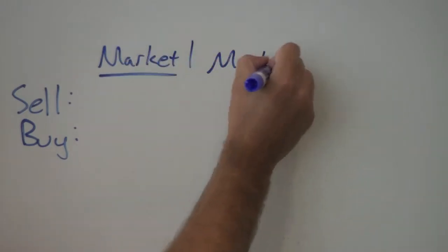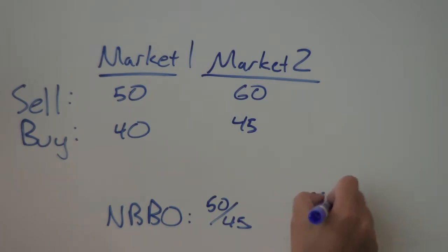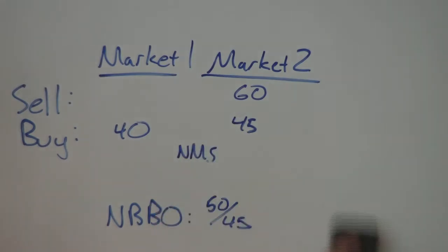Well, a price quote called the National Best Bid Offer, or NBBO, keeps track of the best buy and sell prices across all markets. When the above scenario happens, the National Market System, or NMS, routes the order to the other market and a transaction occurs. Seems like it should work, right?